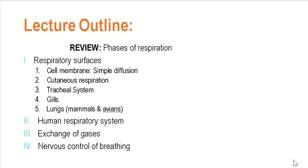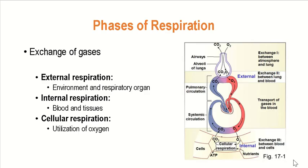Before we have an understanding of the different respiratory surfaces, we must first understand what is respiration. By definition, respiration simply means exchange of gases — either oxygen or carbon dioxide. Respiration can be further subdivided into three types. The first is external respiration. As the name suggests, this is a type of respiration occurring between the organism and the environment — specifically, an exchange of gases between the environment and the respiratory organ.